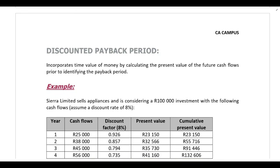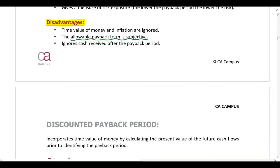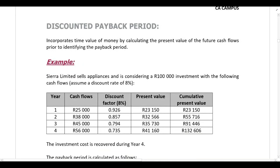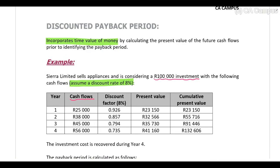The discounted payback period overcomes one of the disadvantages of the standard payback period — specifically, the fact that time value of money was ignored. Now we are going to incorporate time value of money into the calculation. The example is still Sierra Limited considering a 100,000 rand investment with the same cash flows, but we now assume a discount rate of eight percent.